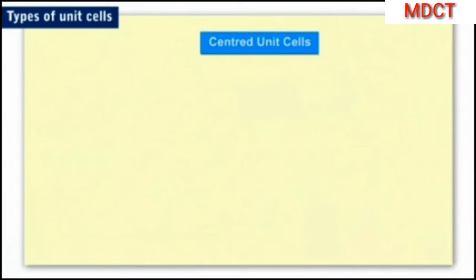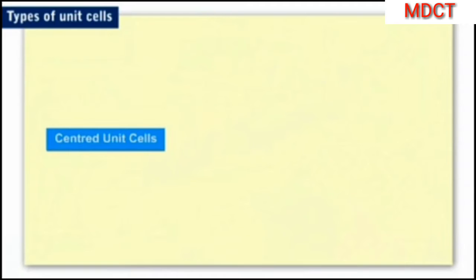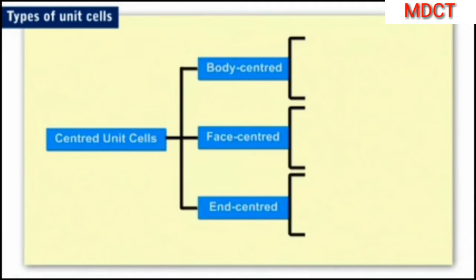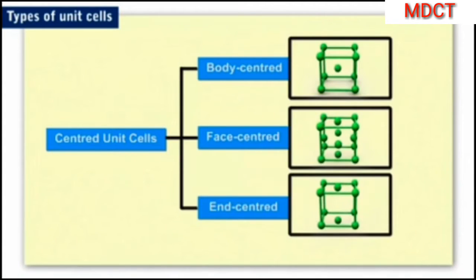Based on the position of the centered constituent particle, centered unit cells are characterized into three types: body centered unit cell, face centered unit cell, and end centered unit cell.